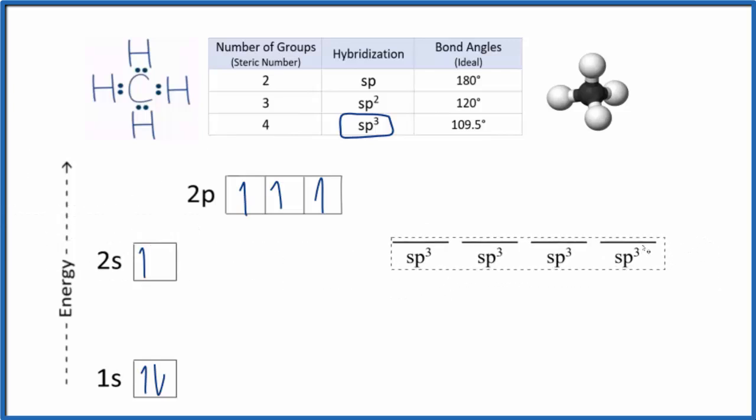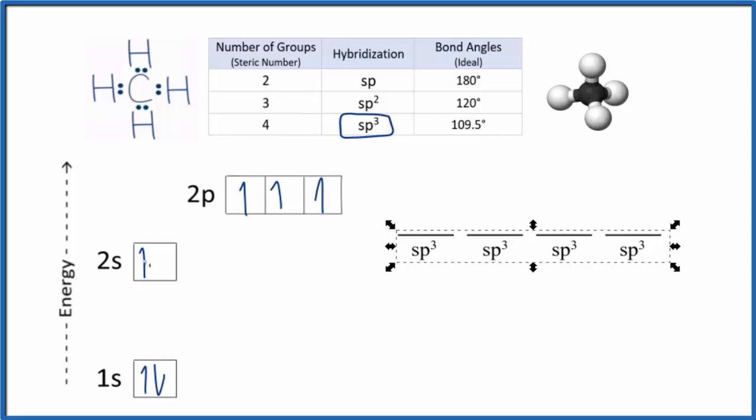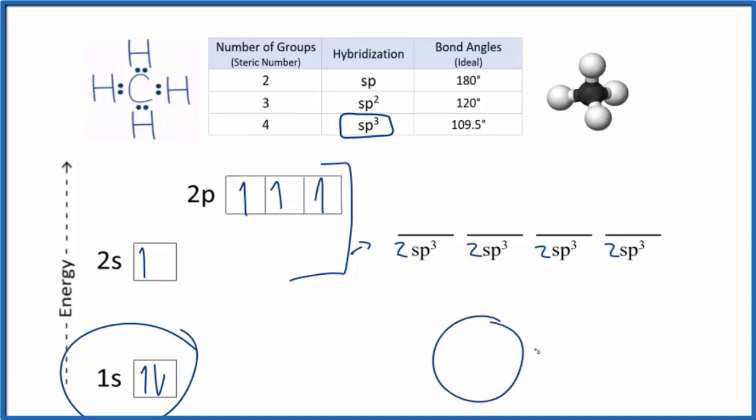We call these degenerate hybrid orbitals. These all have an equal energy, kind of in between the 2s and the 2p. We've taken these, we've hybridized them to form these hybrid orbitals. We still have this 1s down here, but we ignore that. Those aren't valence electrons, they are not involved in bonding, so we're not interested in them.